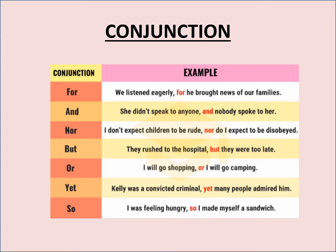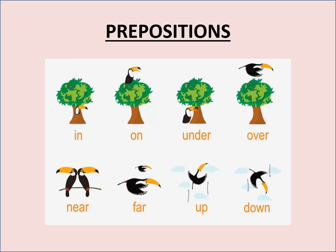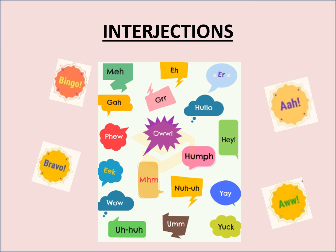Let us now move on to conjunctions. Conjunctions are basically words that are used to join two sentences together. For example, 'and', 'for', 'but', 'or' — all these are used to join two sentences together. Next are prepositions. Prepositions are used to link a noun or phrase to another part of the sentence. They are very commonly used. For example, in, on, under, up, down. The next is interjection. An interjection is basically a word used to express strong feeling or sudden emotion. For example, 'Alas!' — words like 'Ew', 'Congrats', 'God bless you' — all these are interjections.